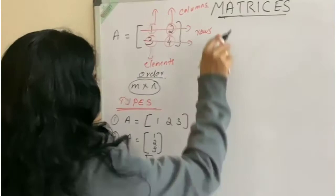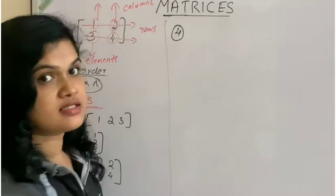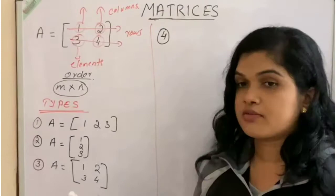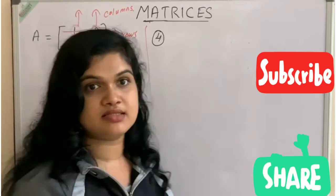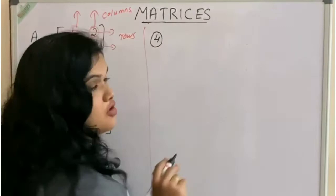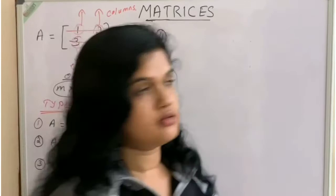Then, our next category is rectangular matrix. Rectangular matrix is opposite to the square matrix. Rectangular matrix has unequal number of rows and columns. That means the number of rows and number of columns are different, not in element-wise, it is in row and column number-wise.